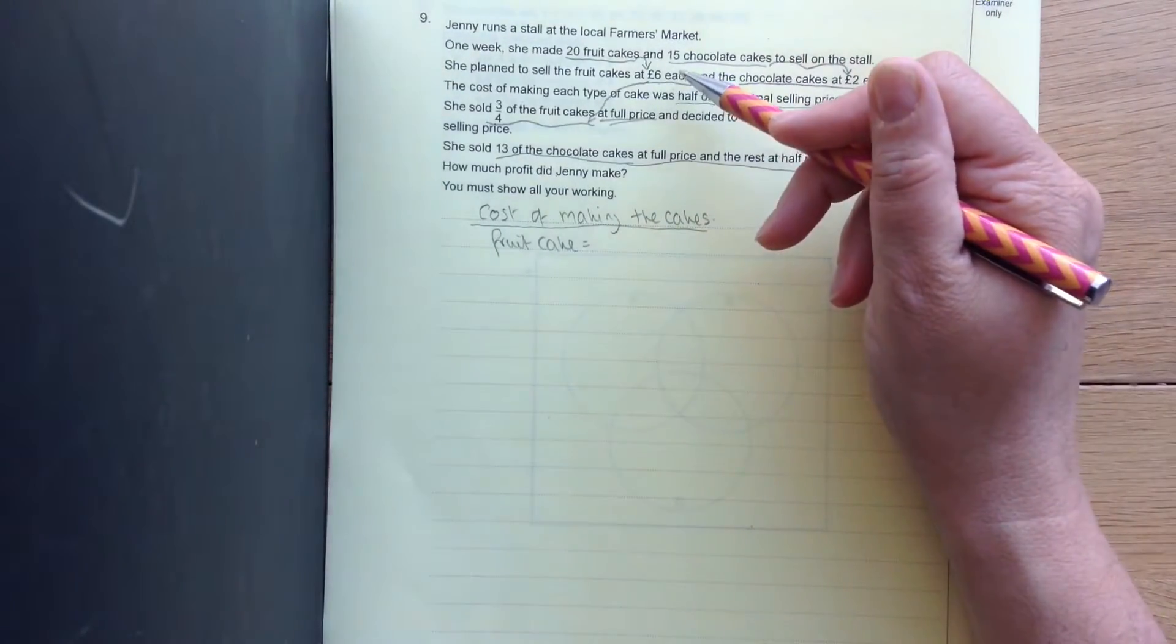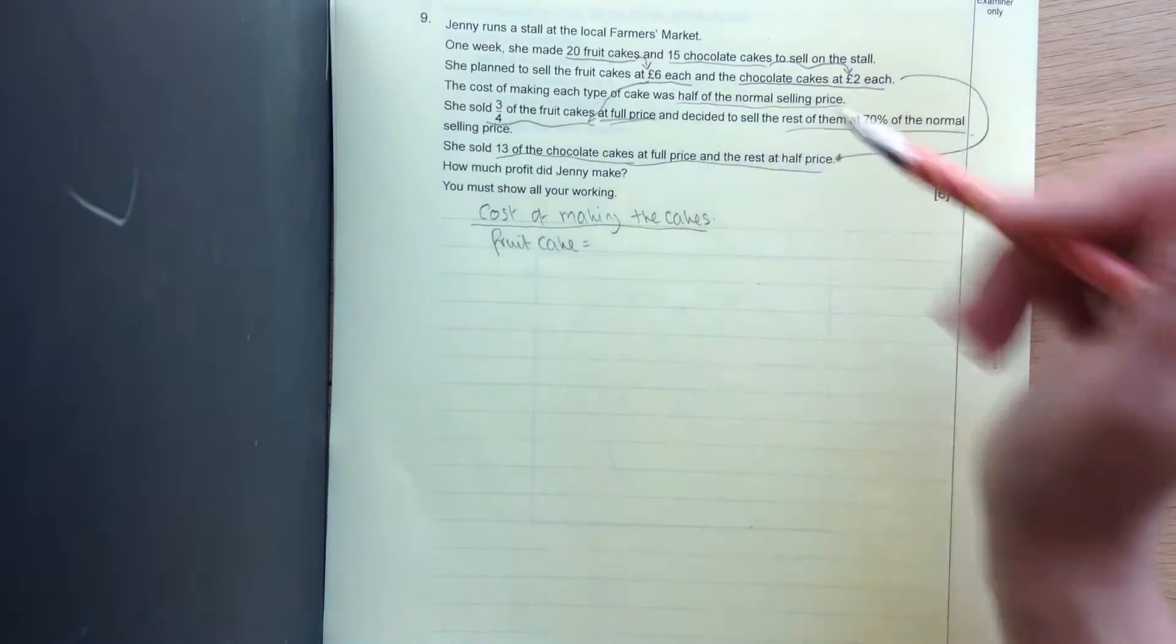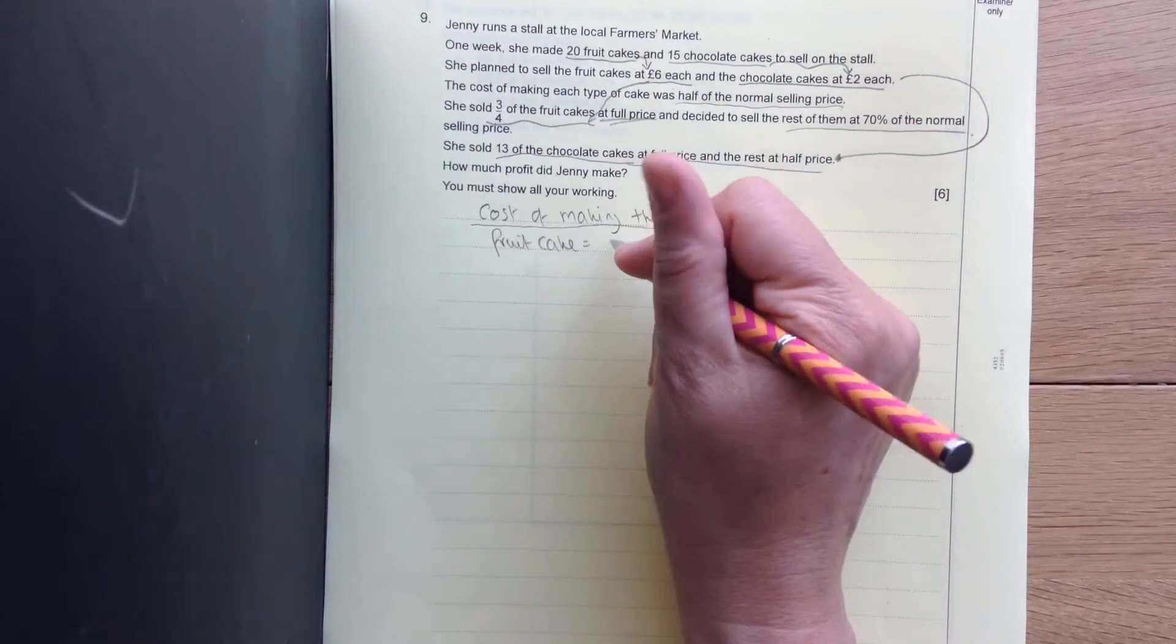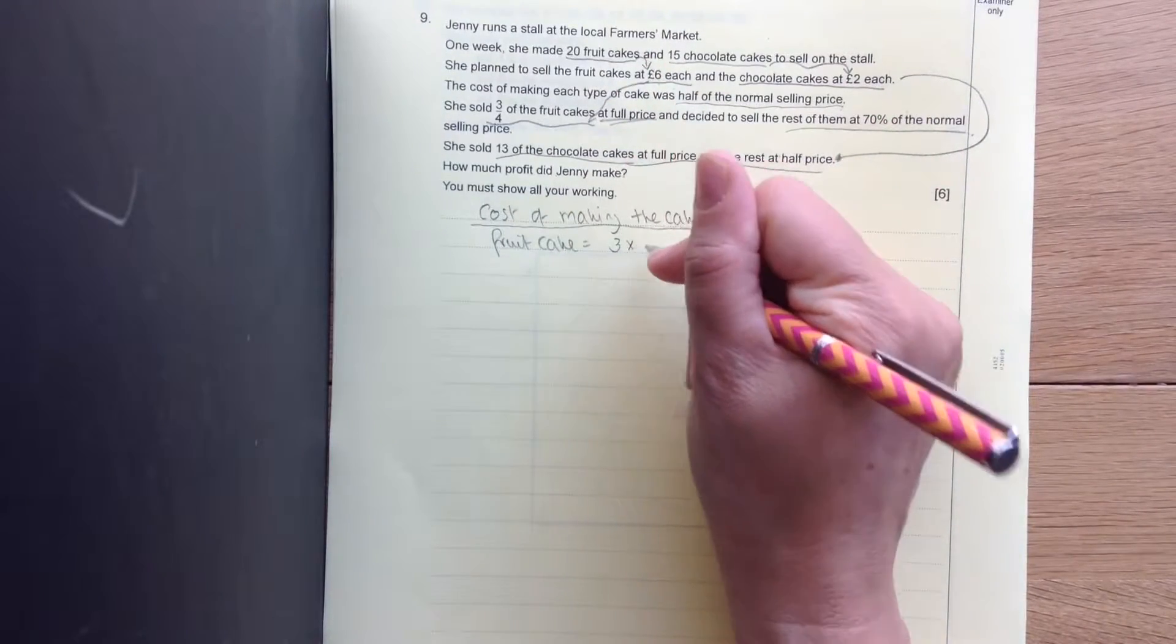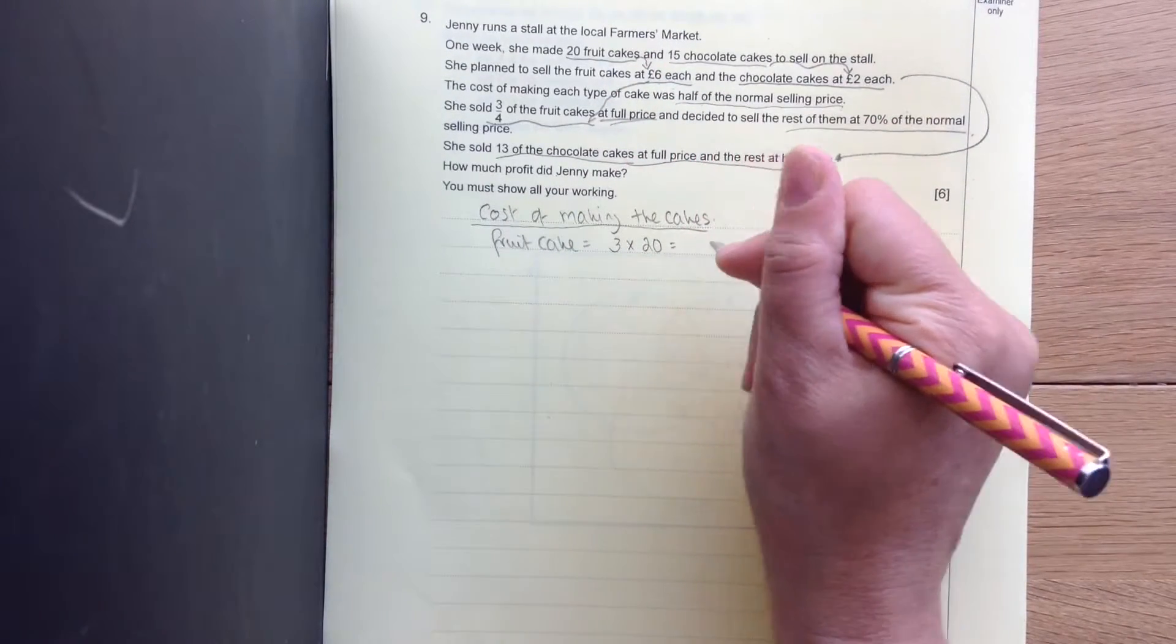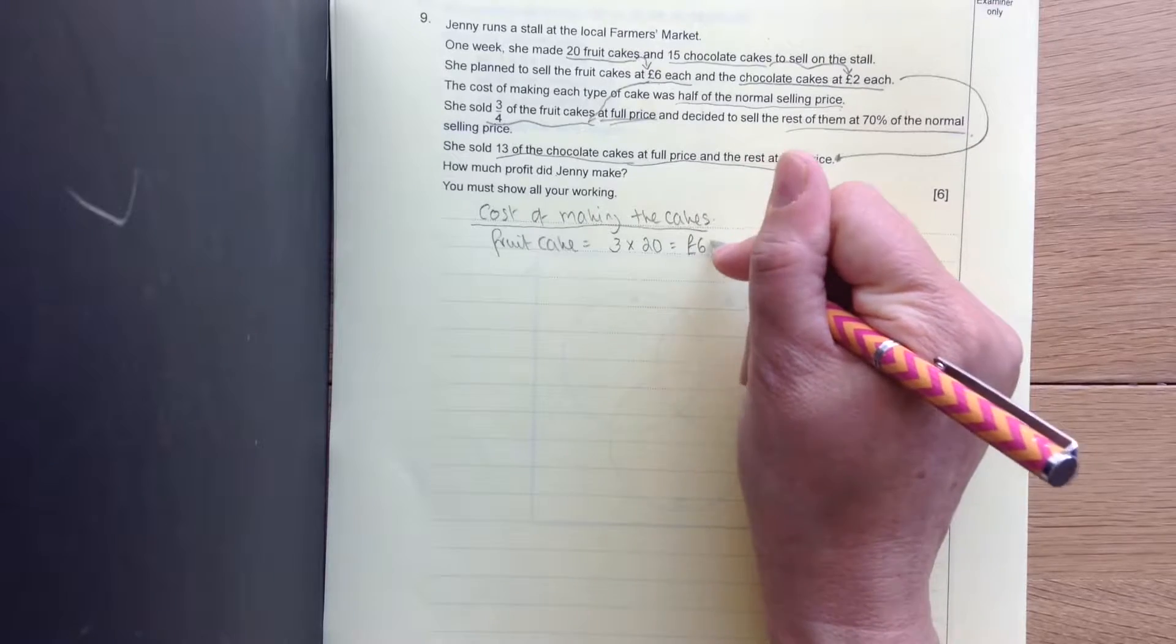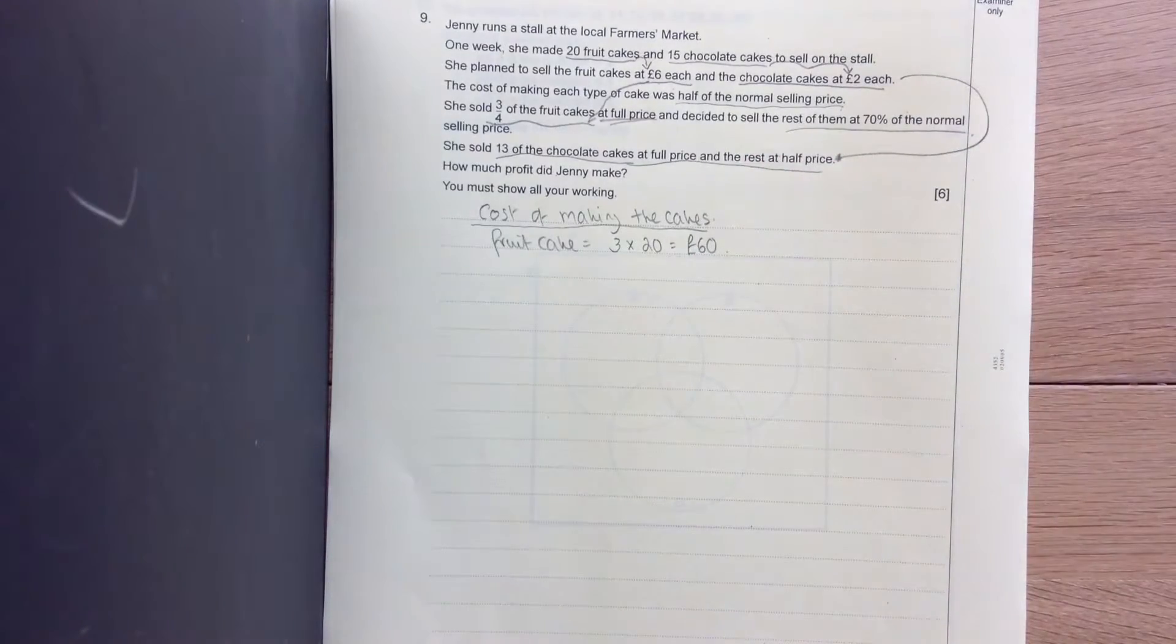So if she sells them at £6, it means it cost her £3 to make them. So 3 for each cake, and there was 20 of them. 3 times 20 is £60. So it cost us £60 to make fruit cakes.